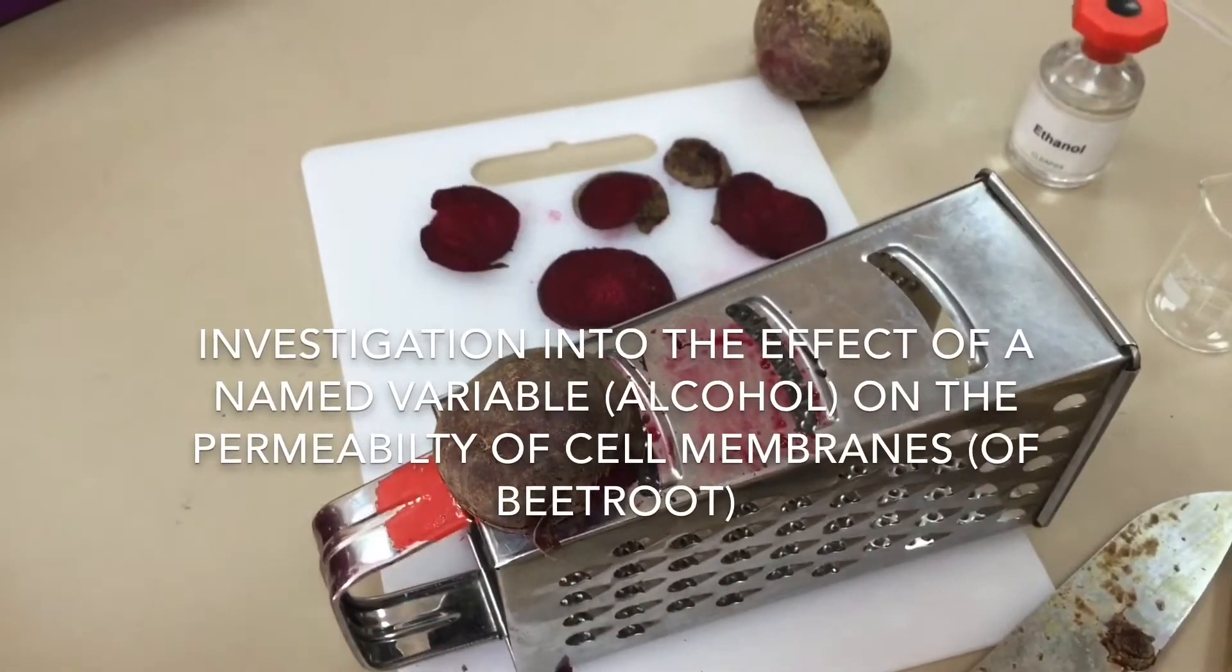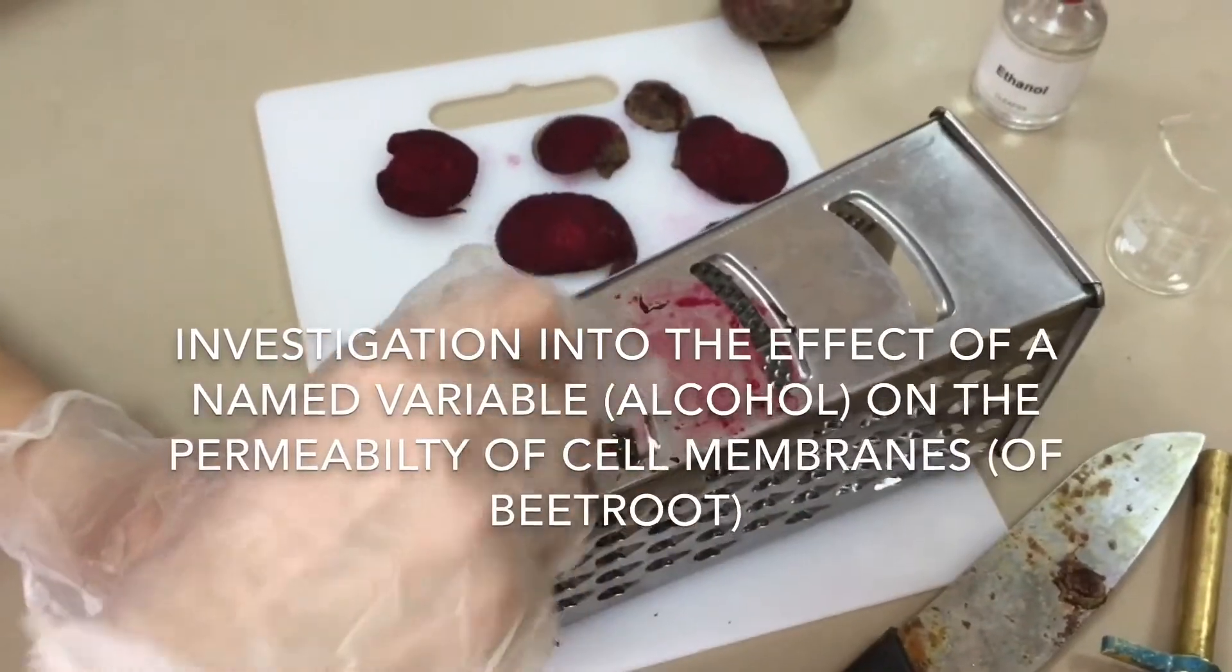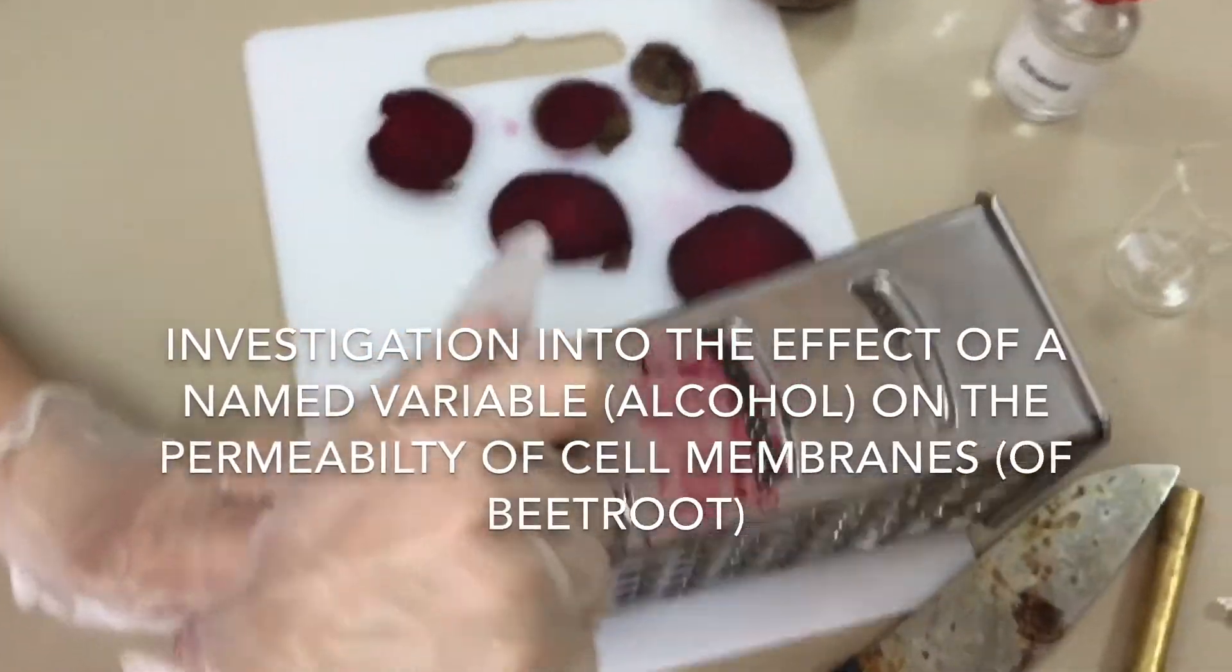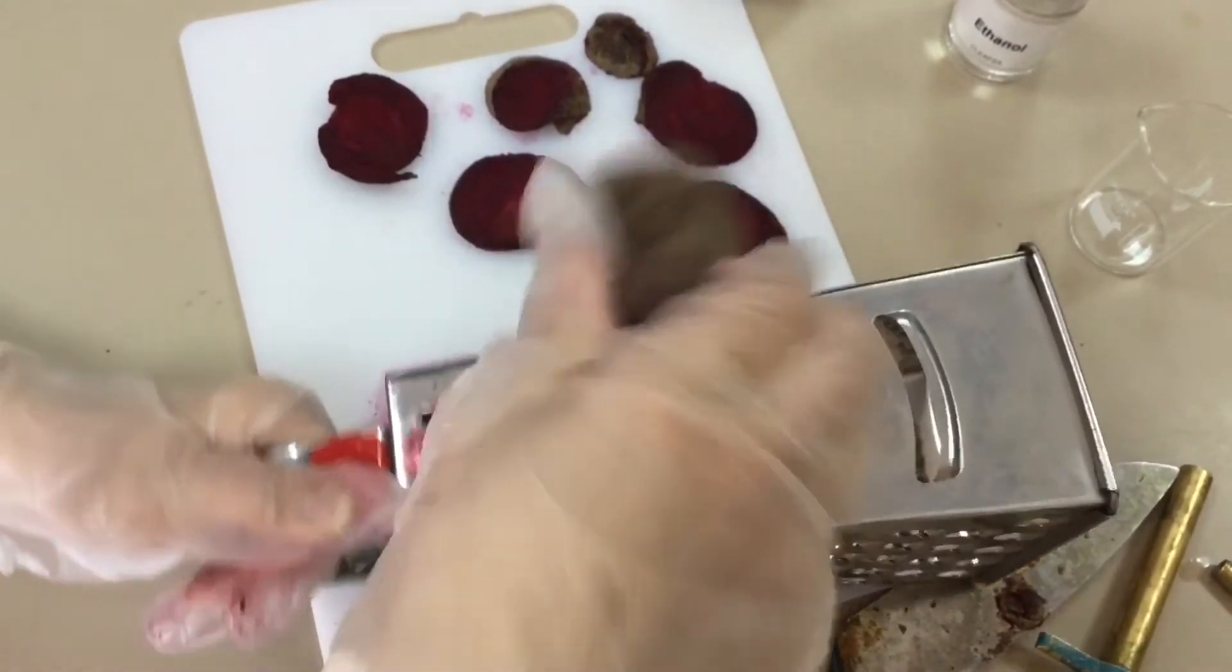The named variable will be the concentration of alcohol, and how we're going to measure the disruption or the permeability is that when the membrane of beetroot cells break down they release their pigment.